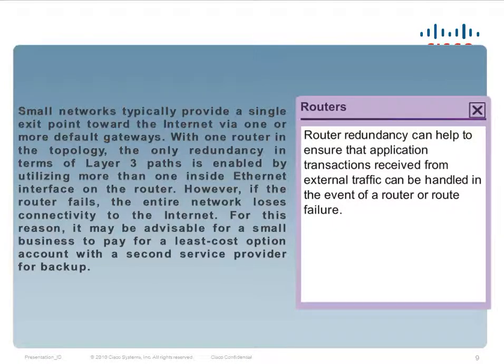Small networks typically provide a single exit point towards the internet via one or more default gateways. With one router in the topology, the only redundancy in terms of layer 3 paths is enabled by utilizing more than one inside Ethernet interface on the router. However, if the router fails, the entire network loses connectivity to the internet. For this reason, it may be advisable for a small business to pay for a least-cost option with a second service provider for backup.